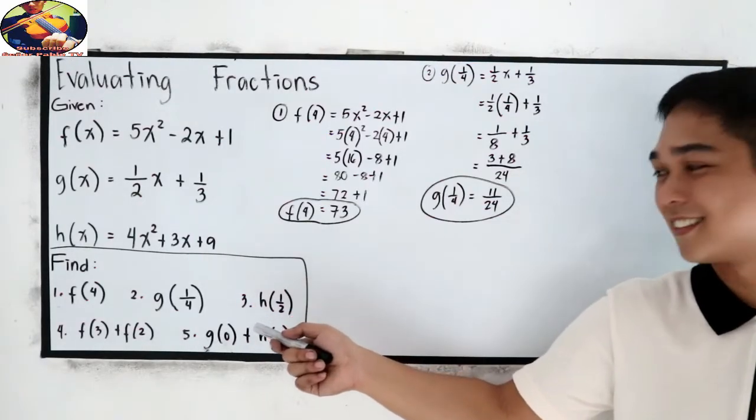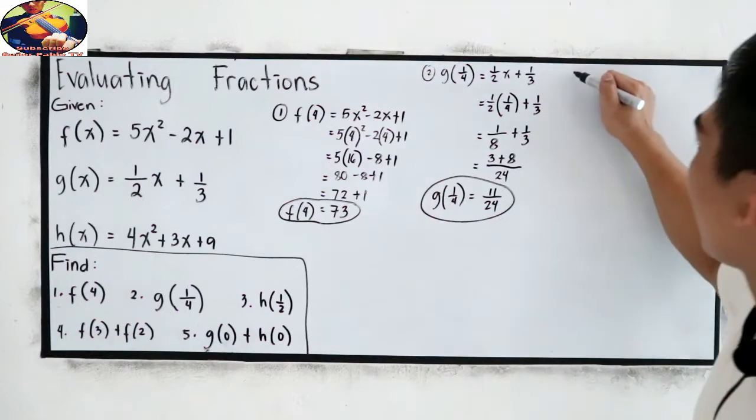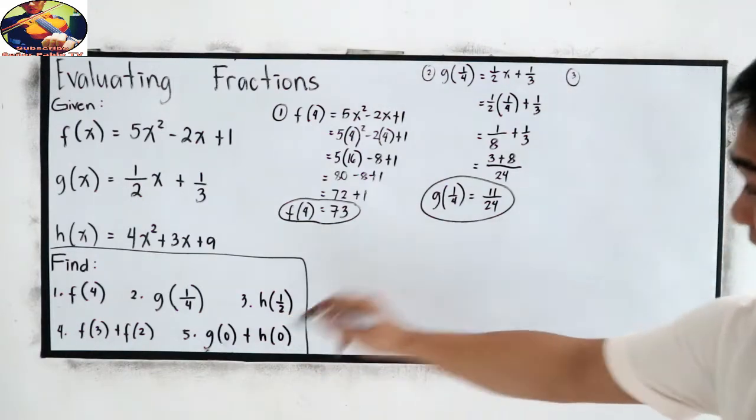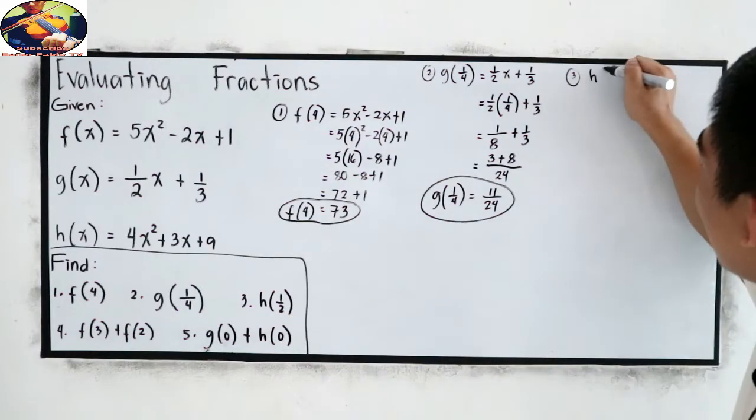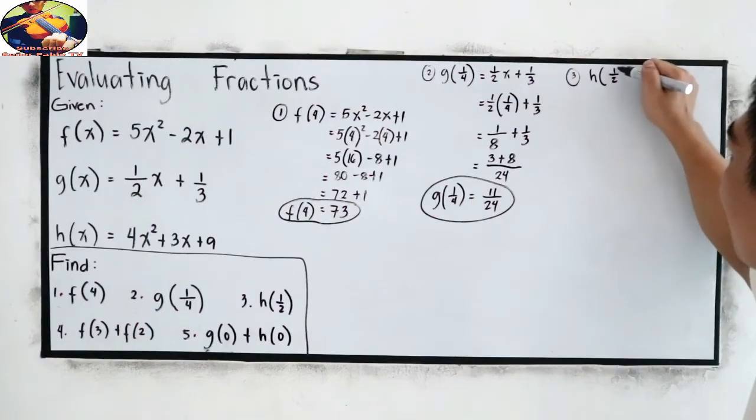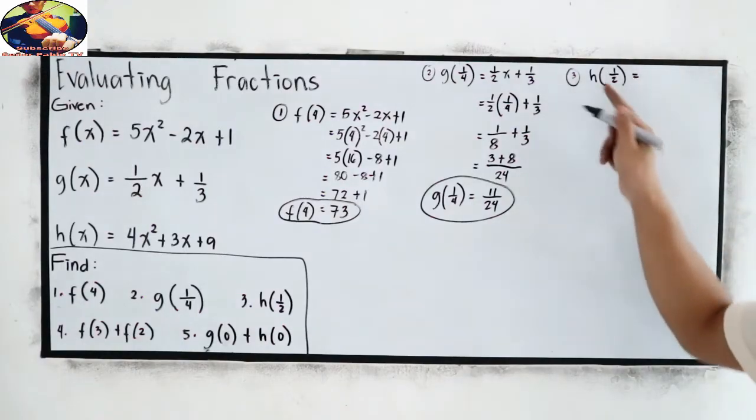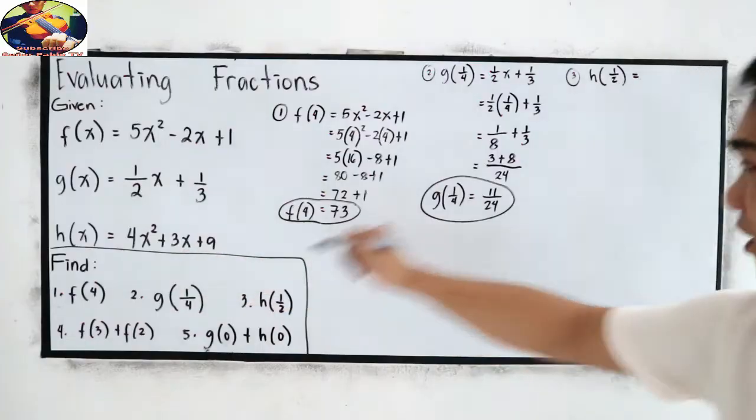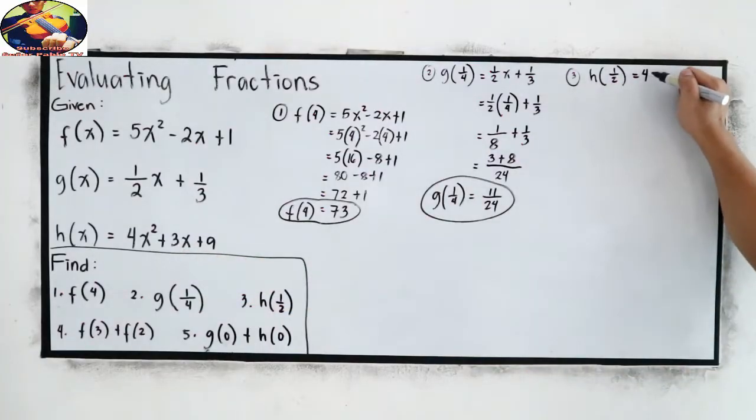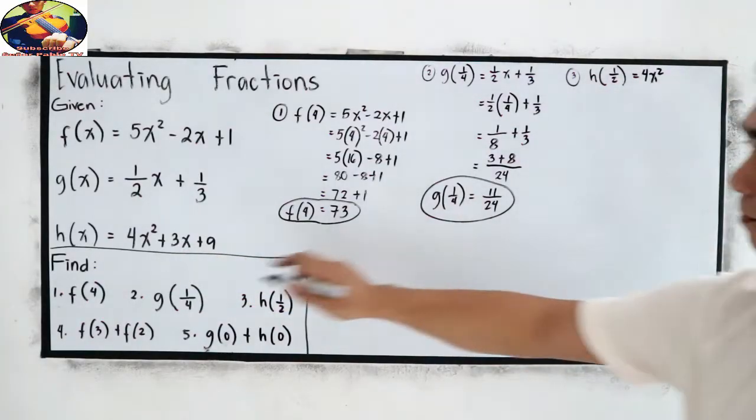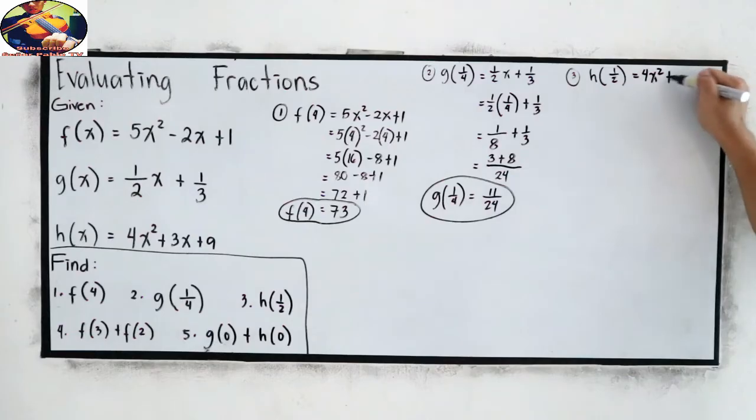Number 3. Number 3 is h of 1 half. So, we have h of x. Just copy our expression, which is 4x squared plus 3x plus 9.